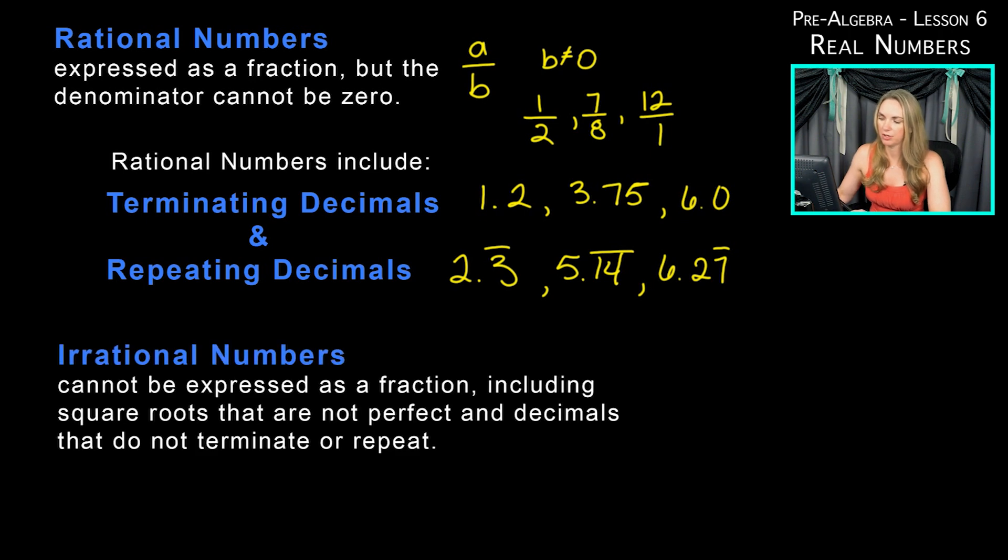An irrational number cannot be expressed as a fraction, including square roots that are not perfect and decimals that do not terminate or repeat. If we have a square root that is not a perfect square, like the square root of seven, that's an irrational number. If I have negative square root of 12, also an irrational number because neither of these are perfect squares.